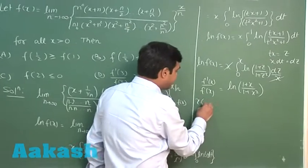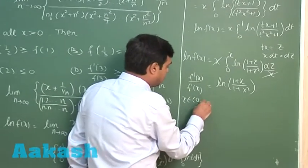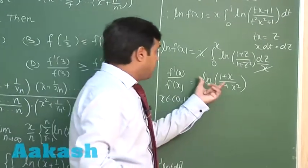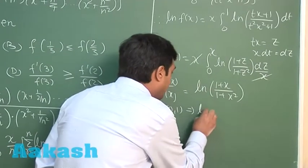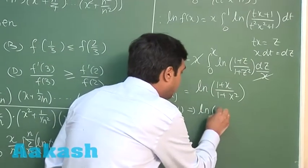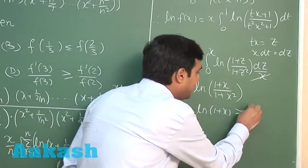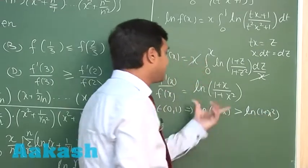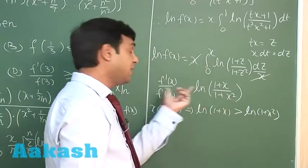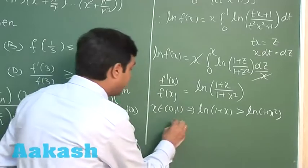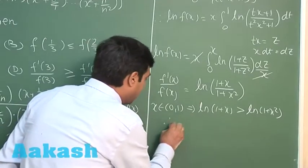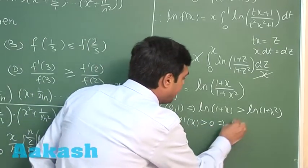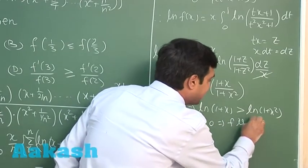For the interval (0, 1): log(1 + x) > log(1 + x²) since x > x² on (0,1). So f'(x)/f(x) > 0, meaning f'(x) > 0, meaning f is increasing on (0, 1).